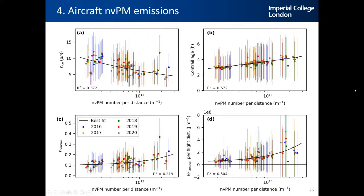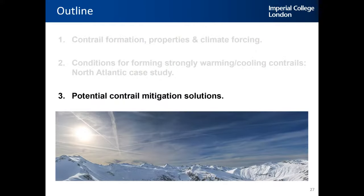To summarize, there are four main factors that influence whether contrails are strongly warming or cooling: seasonal effects, diurnal effects, background cloud fields, and aircraft non-volatile particulate matter emissions. Now, with a basic understanding of contrail climate forcing, you might ask: what are the potential contrail mitigation solutions? Given that contrail radiative forcing could be equal to or higher than aviation's CO2 radiative forcing, something needs to be done. There are three potential mitigation solutions.